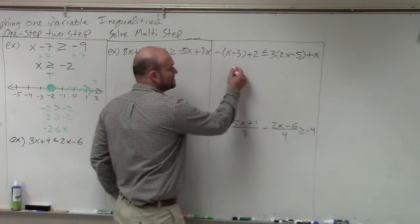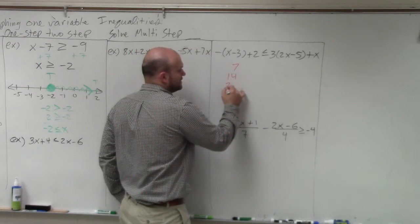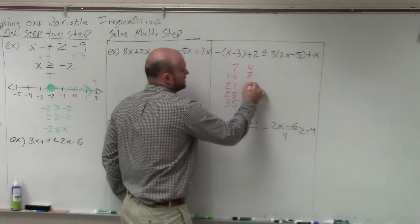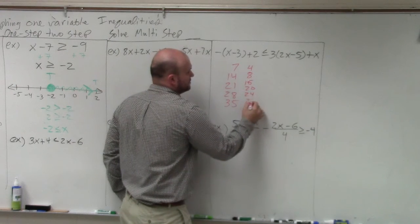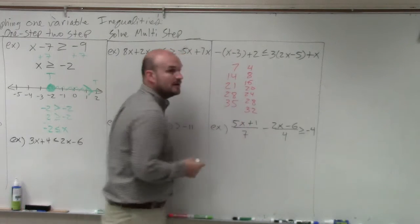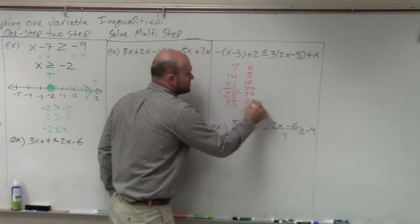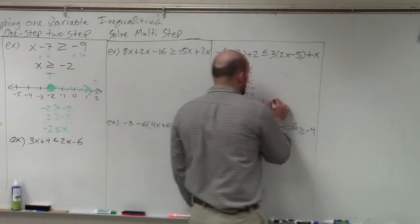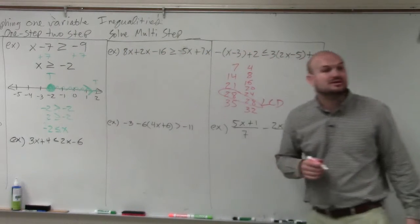So we want to find the smallest number that 7 and 4 both divide into. So to find that number, we can just list the multiples: 7, 14, 21, 28, 35; 4, 8, 16, 20, 24, 28, 32. And what you guys see is the smallest number that both 7 and 4 divide into is 28. That is what we call our least common denominator, our least common multiple.